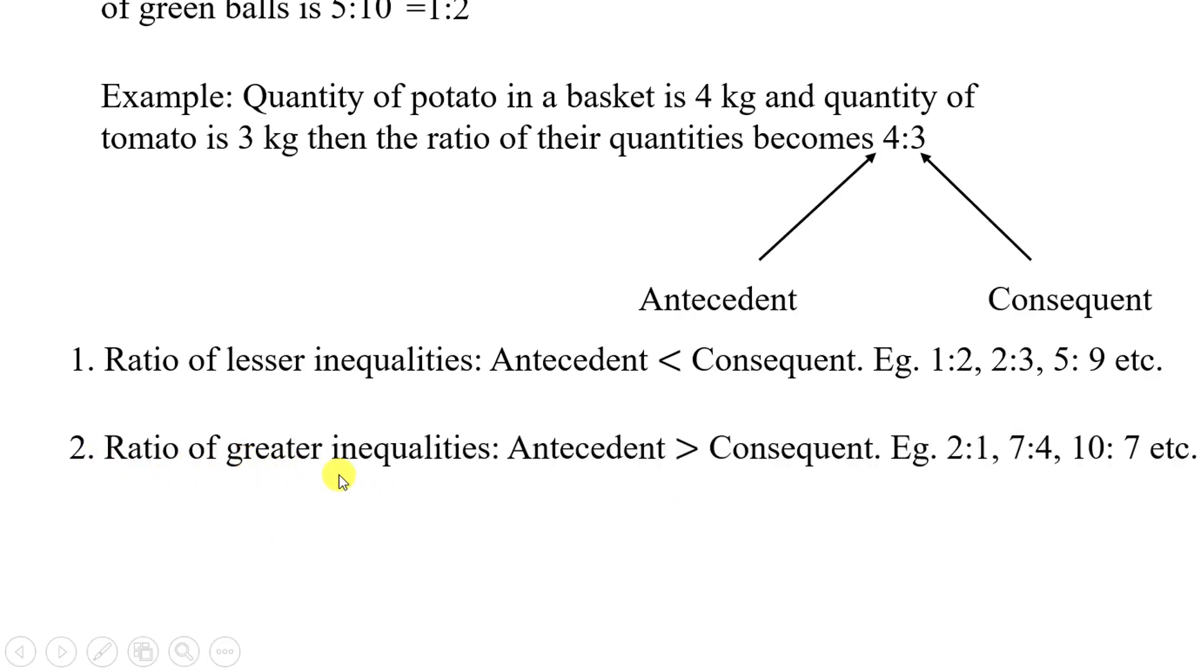Or another is ratio of greater inequalities. Greater inequalities when antecedent is greater than consequent. That is like for example 2:1, 7:4, where the first is greater than the second.